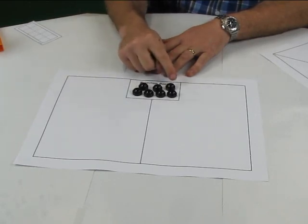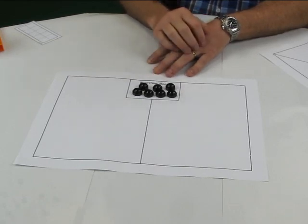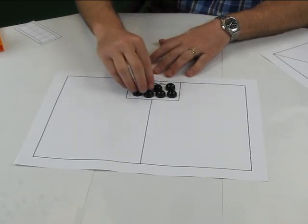We have seven counters here. At the moment they're in this spot, and all the children need to do is split the counters off.